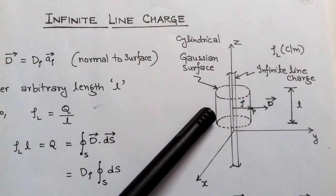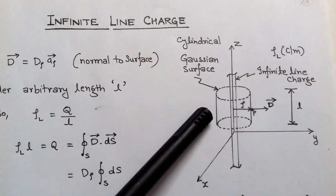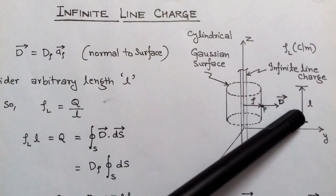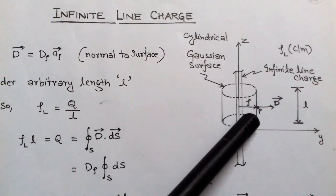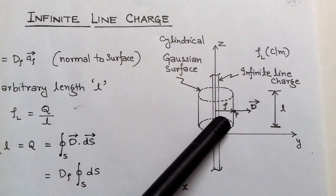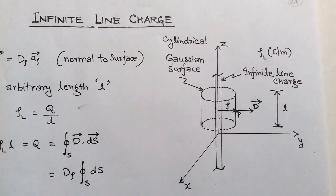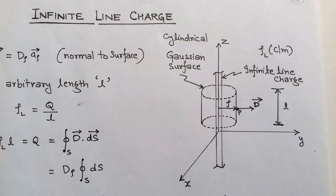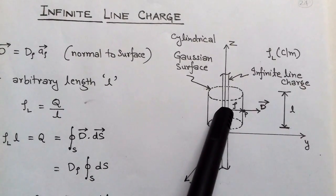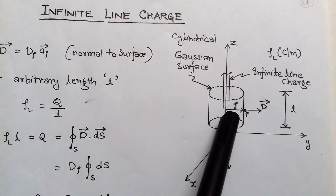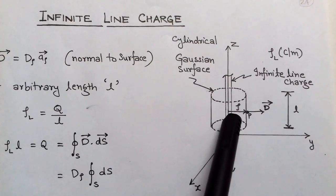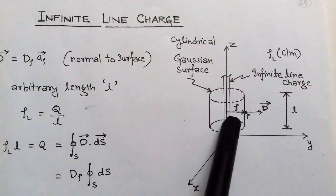We consider a Gaussian surface of cylindrical shape having a length l. On this Gaussian surface we consider a point P. The distance of point P with respect to the z-axis is ρ. Note: do not confuse ρ and ρl — ρl is the line charge density, while ρ is the distance of the point from the z-axis, or equivalently the radius of the assumed cylinder.